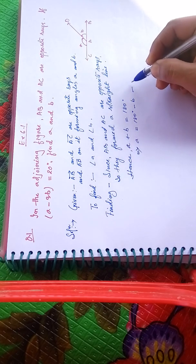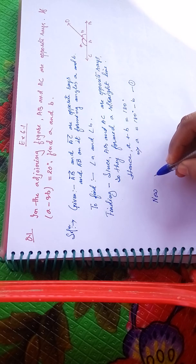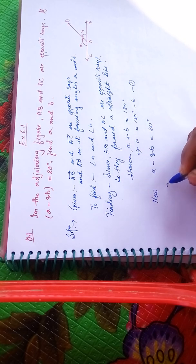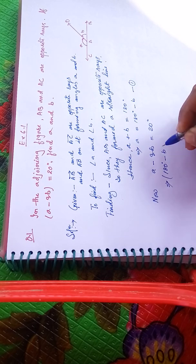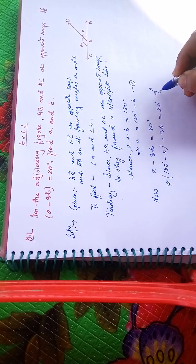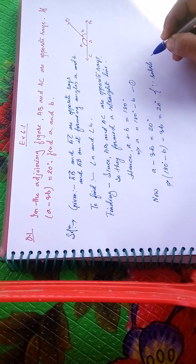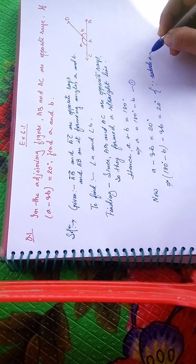Given that A minus 3B equals 20 degrees. We have A equals 180 degrees minus B. Now substituting the value of A...